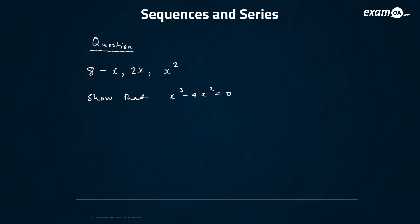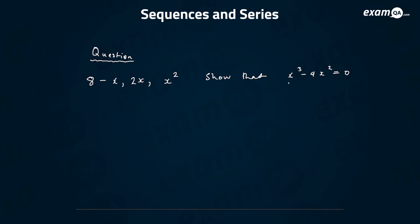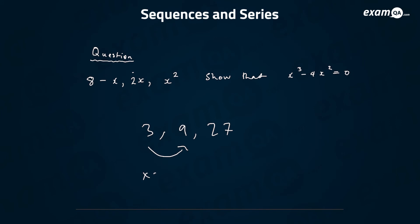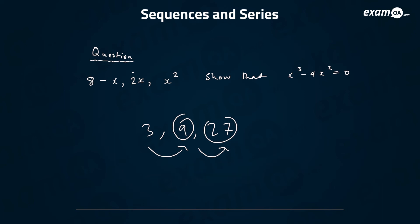A typical type of question might look like this: they give you three terms of a geometric sequence and say 'can you show this equation?' We have to be a bit creative. The ratio is the second term divided by the first. For example, with the sequence 3, 9, 27 — 9 divided by 3 gives the ratio of 3, so we multiply by 3 every time. And 27 divided by 9 also gives 3.